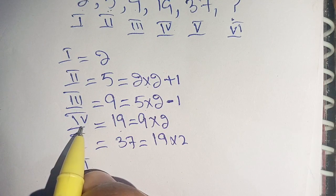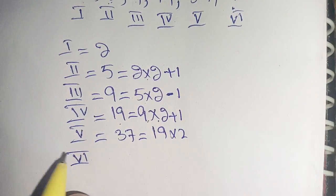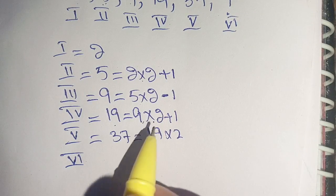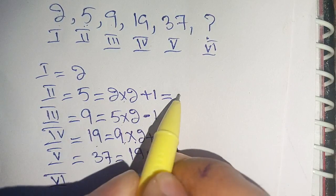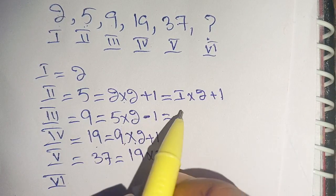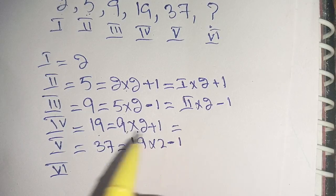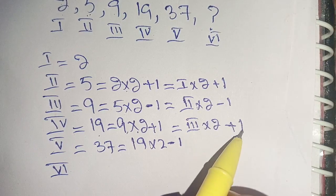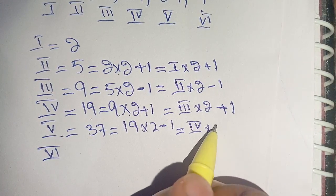For the fourth term, when we multiply the third term by 2, it becomes 18, and when we add plus 1, it becomes 19. For the fifth term, when we multiply the fourth term by 2, it becomes 38, and when we subtract minus 1, it becomes 37.